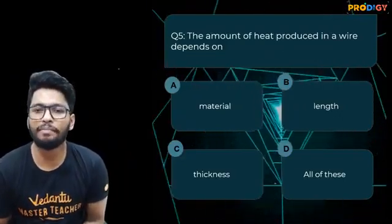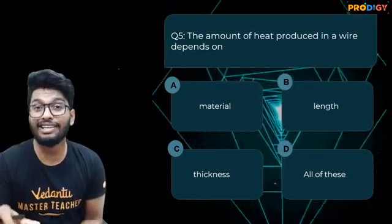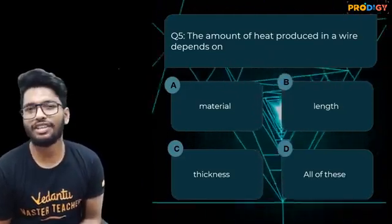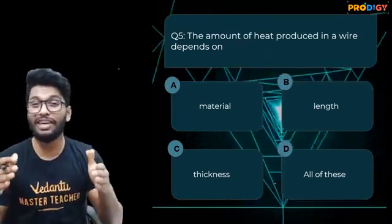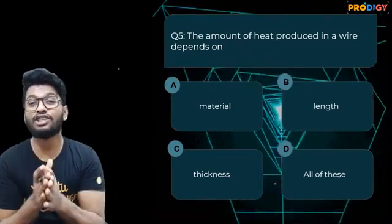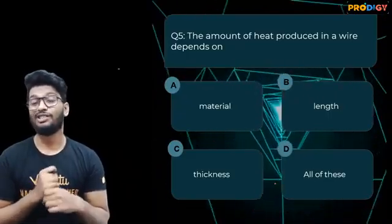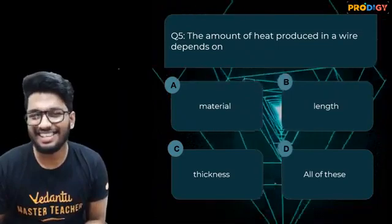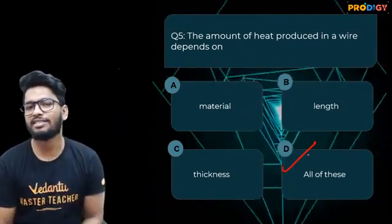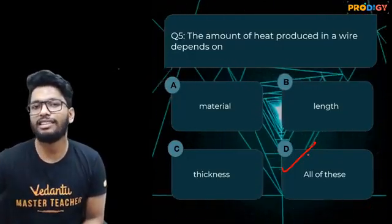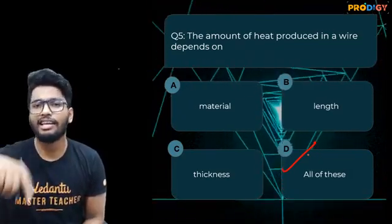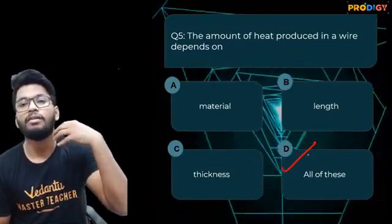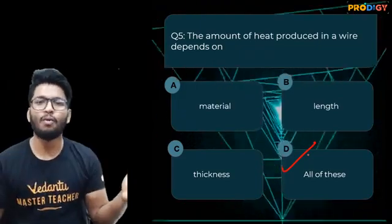Fifth question: The amount of heat produced in a wire depends on — A) the material, B) the length, C) the thickness, or D) all of the above. The answer is all of the above. It depends on the material because some materials have higher resistance and produce more heat energy. Length is also a factor — the more the length, the more the resistance, and the more heat energy produced. And it depends on thickness — greater thickness means less resistance and less heat energy; lesser thickness means greater resistance and greater heat energy produced.